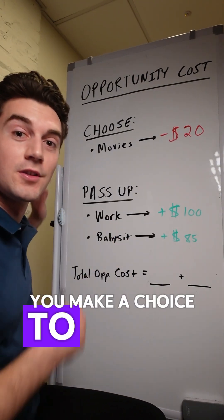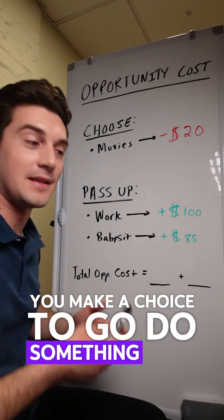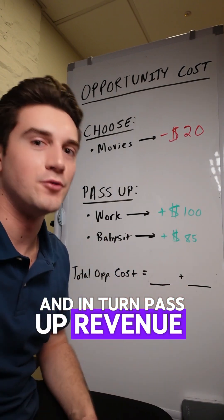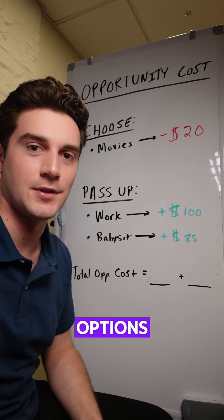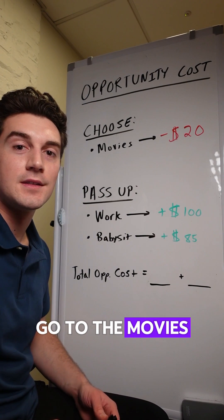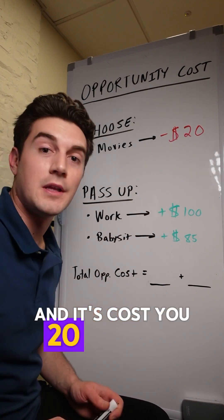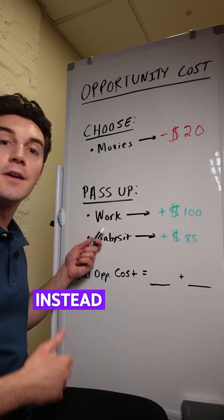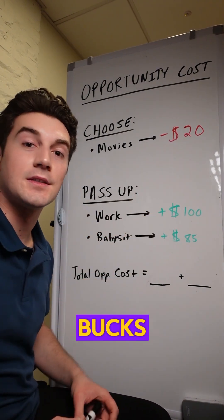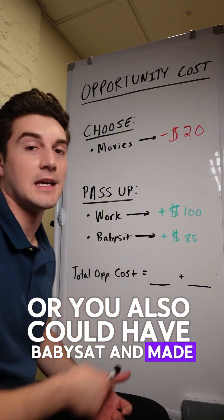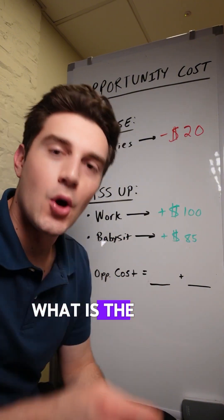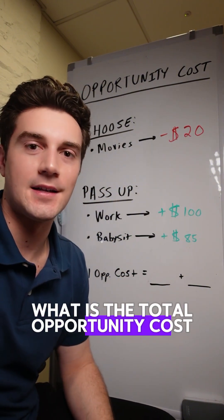You make a choice to go do something that costs money and in turn pass up revenue-generating options. So I mapped out right here: you're choosing to go to the movies and it's costing you $20, instead of going to work and making $100, or you also could have babysat and made $85. What is the total opportunity cost here?